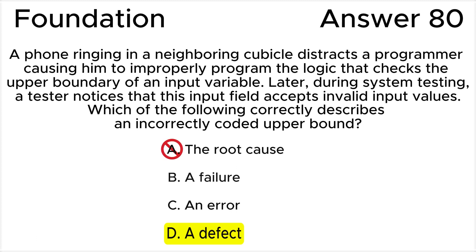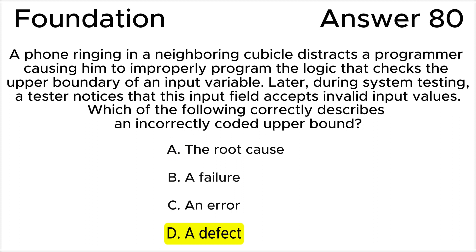Answer A is incorrect, because the root cause is the distraction that the programmer experienced while programming. While the distraction leading to incorrect coding is indeed the root cause, the question specifically asks for the description of the incorrectly coded upper bound, not the root cause. The root cause is the source of the problem, not the problem itself.